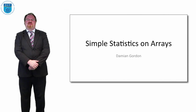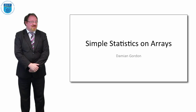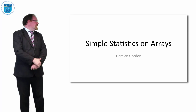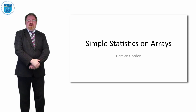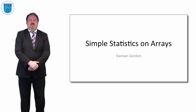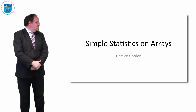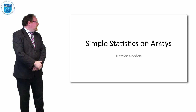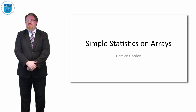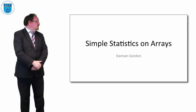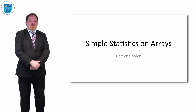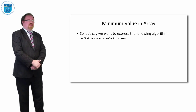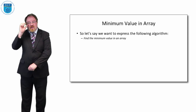Hello everybody and welcome to this episode of Programming and Algorithms. In this episode we're going to look at how to do some simple statistics on an array. We'll look at how to calculate the minimum value, the maximum value, the average, and the standard deviation of an array. We start off with working out how to calculate the minimum value.